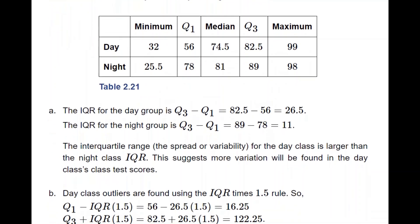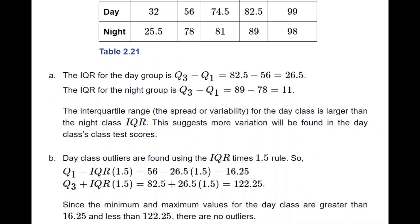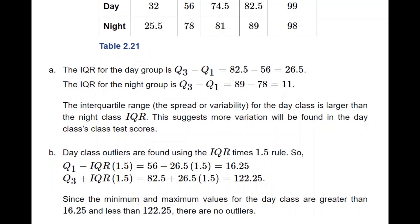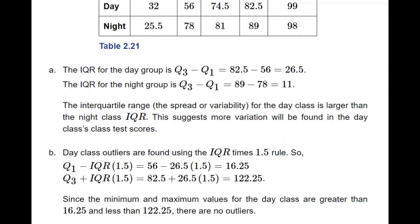When we calculate the outliers, we need 1.5 times the IQR for each data set. For the day class: Q1 minus 1.5×IQR is 16.25, and Q3 plus 1.5×IQR is 122.25. The minimum and maximum values of the day class are 32 and 99, both within those boundaries, so there are no outliers in the day class.